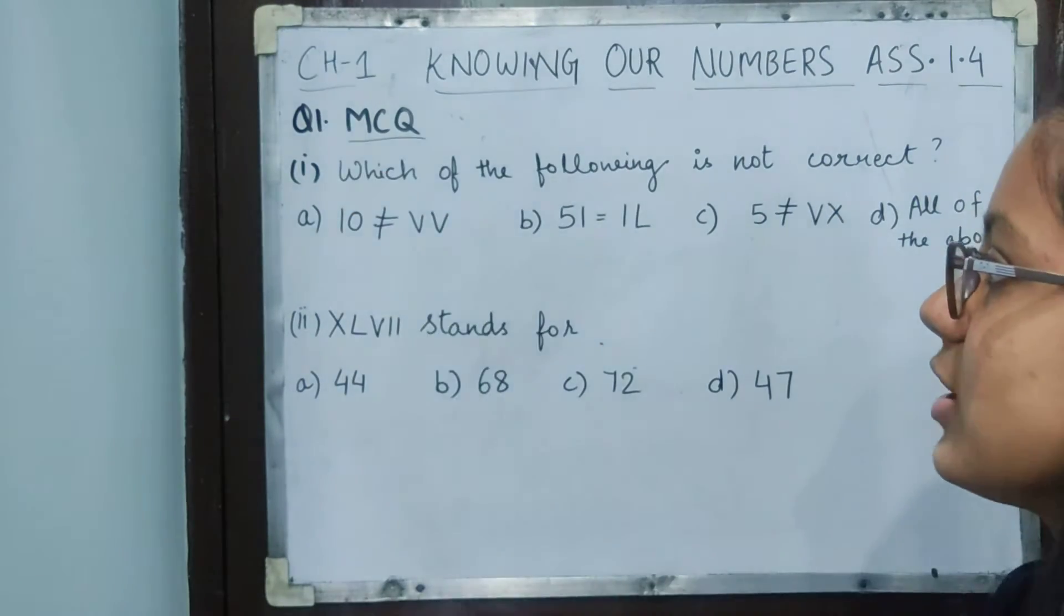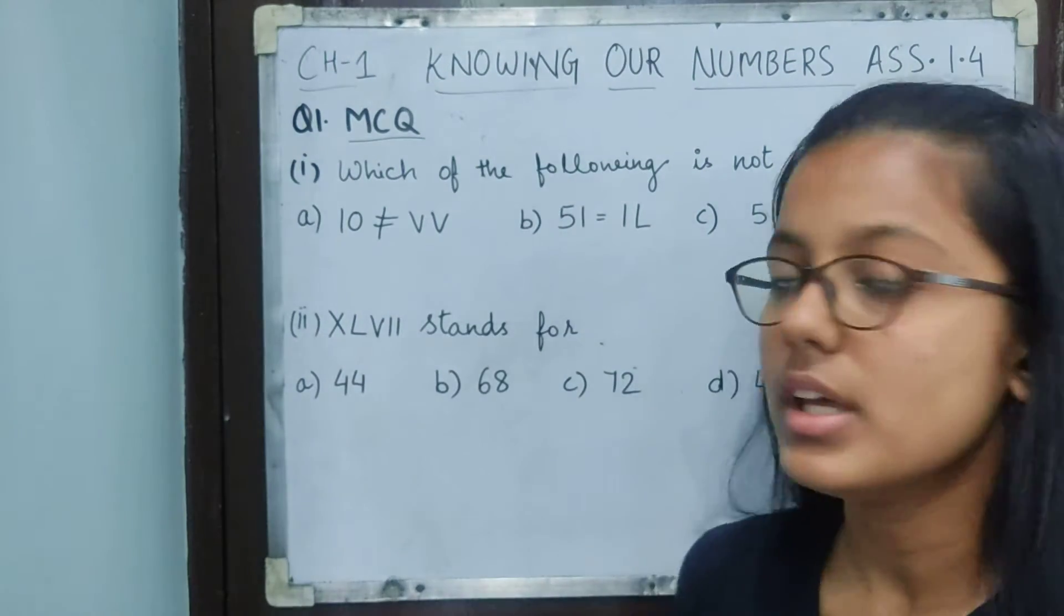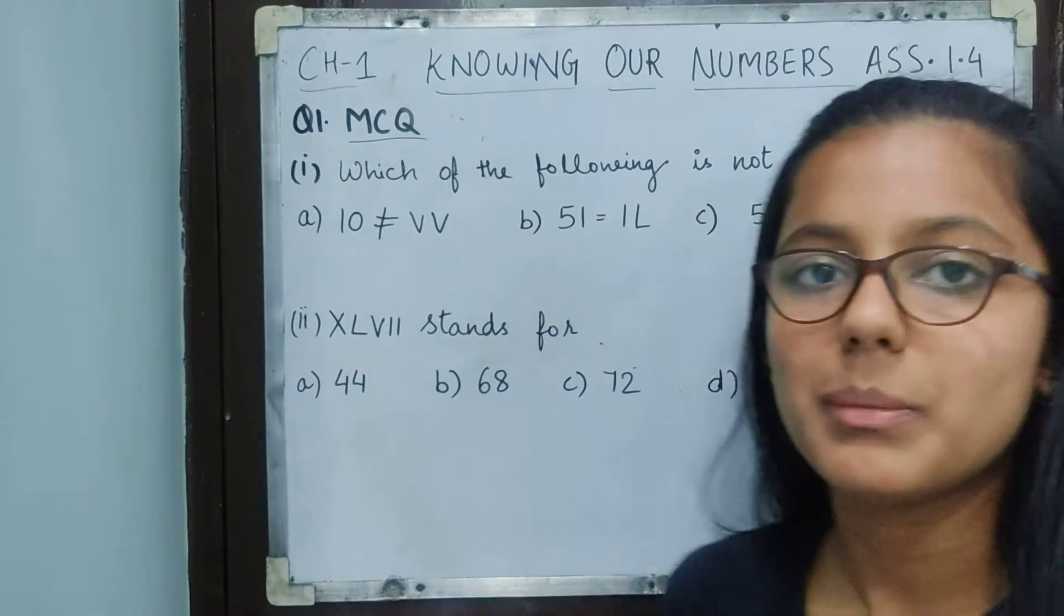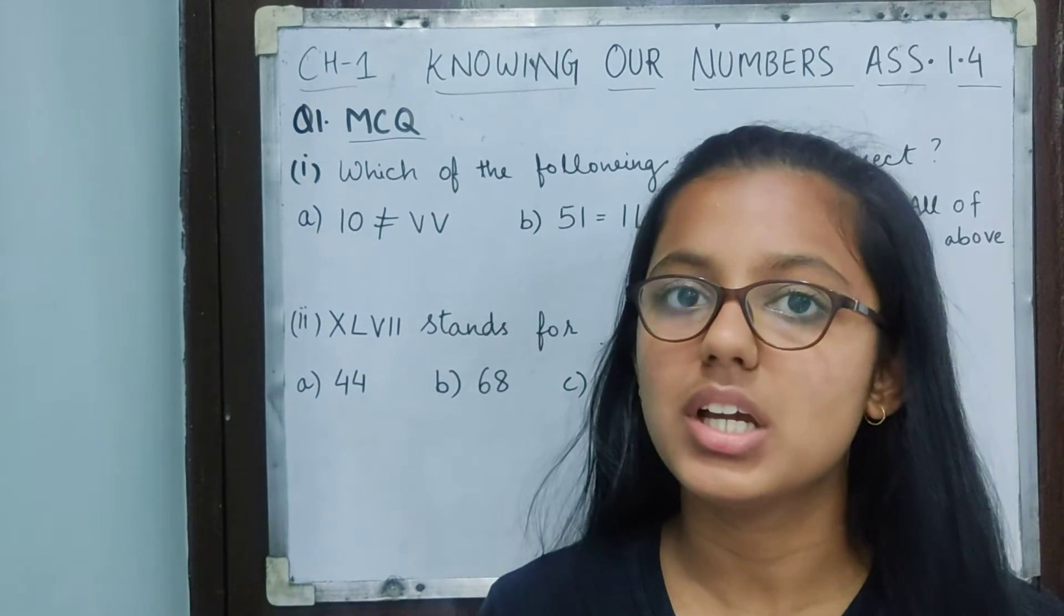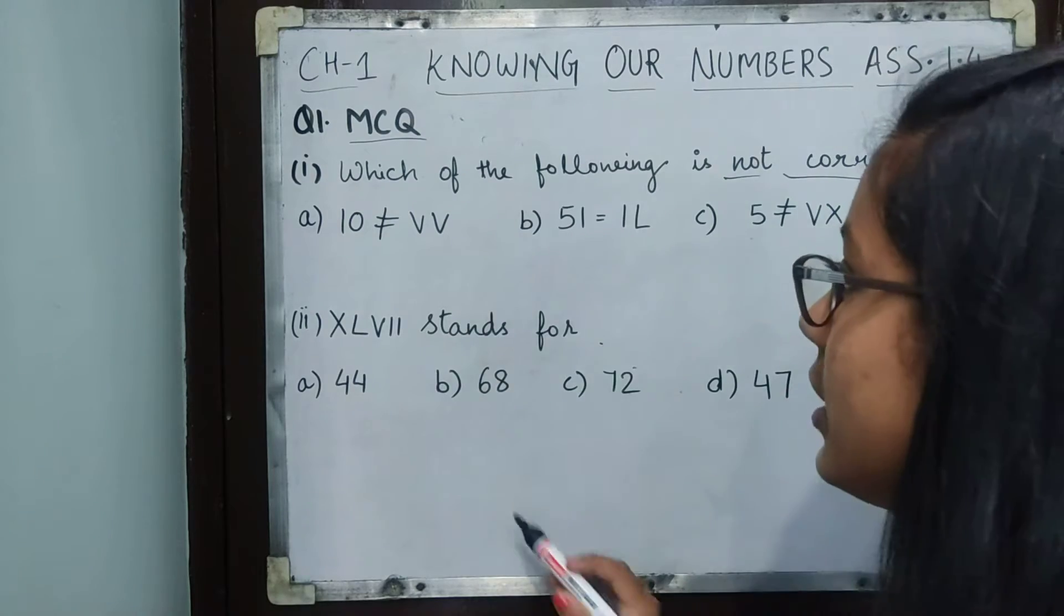Question one is MCQ. Let's read our first question: which of the following is not correct? That means three options will be correct and one will be incorrect.